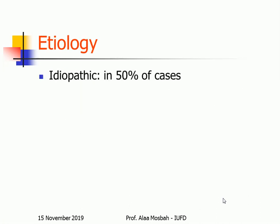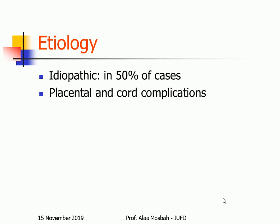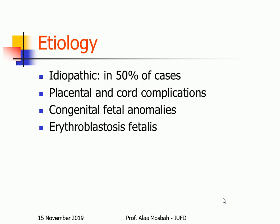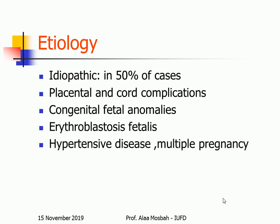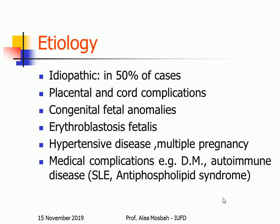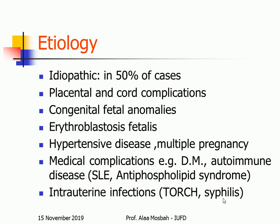Regarding etiology: idiopathic in 50% of cases — this is the commonest. Other causes include placental and cord complications, congenital fetal anomalies, erythroblastosis fetalis, hypertensive diseases including preeclampsia, eclampsia, and essential hypertension, multiple pregnancy, medical complications like diabetes mellitus, systemic lupus, or antiphospholipid syndrome, and intrauterine infection with Toxoplasma, rubella, cytomegalovirus, herpes.